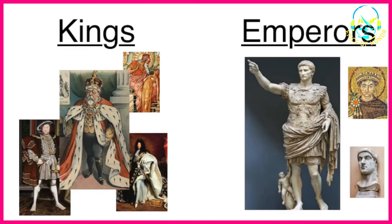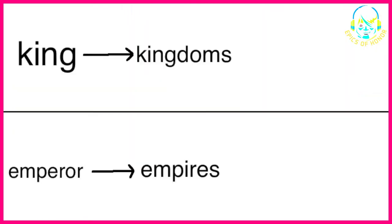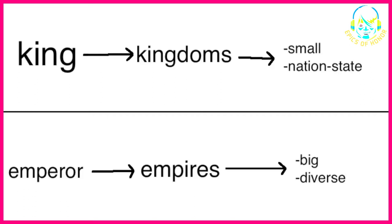I think we all think of different groups of people when I say these words, but these people and the countries they were in charge of seem pretty similar to me. Maybe the difference is that kings have kingdoms while emperors have empires, and a kingdom is a small nation-state while an empire is a much bigger multinational entity.